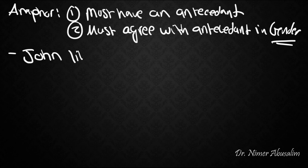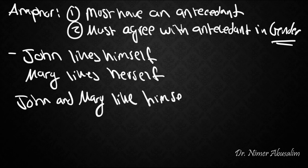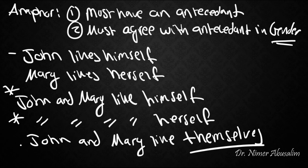Now take some more sets of data. John likes himself. Mary likes herself. John and Mary like himself. That's bad. John and Mary like herself is bad. But John and Mary like themselves is good. So now we go back and modify our hypothesis one more time that it must not only agree in gender but also in number as well with the antecedent.